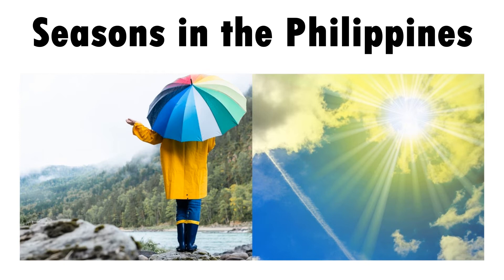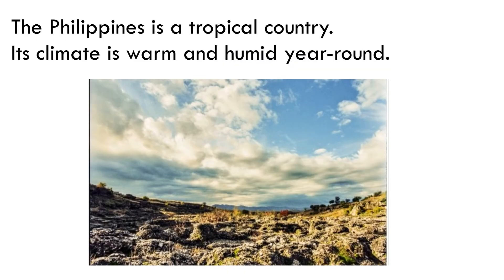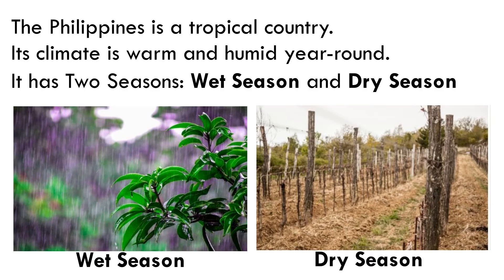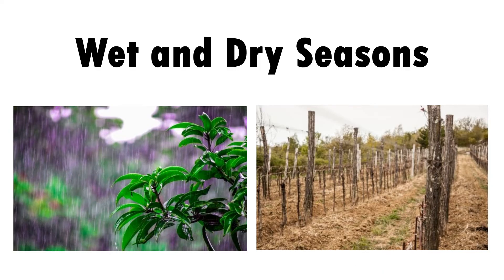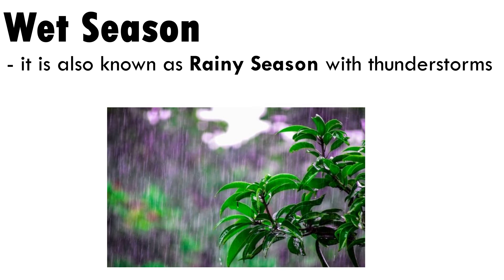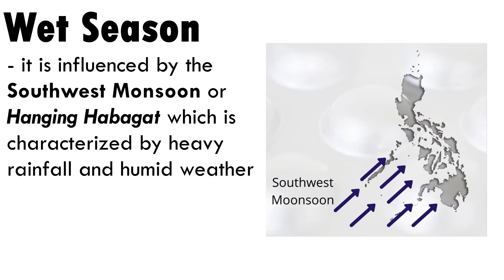Seasons in the Philippines: the Philippines is a tropical country, and its climate is warm and humid year-round. It has two seasons: the wet season and the dry season. The wet season, also known as the rainy season, runs from June to November, though occurrence may vary each year. It is influenced by the southwest monsoon or hanging habagat, characterized by heavy rainfall and humid weather.